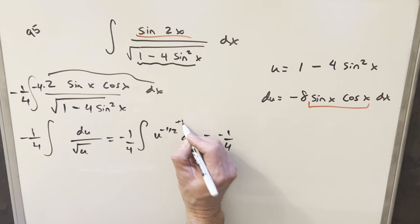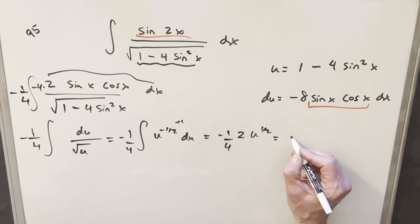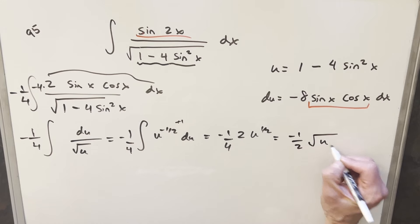So the integral here, adding a plus 1, this is going to give me u to the 1 half, take the reciprocal, and we have a 2 here. But this thing's going to actually be minus 1 half square root of u. So all I need to do now is back substitute in order to finish it off.